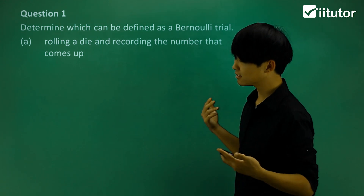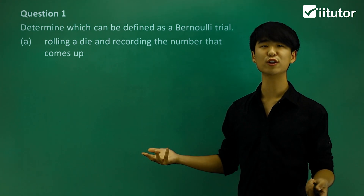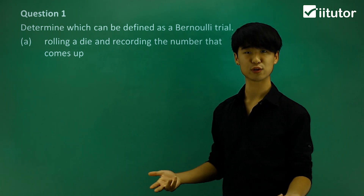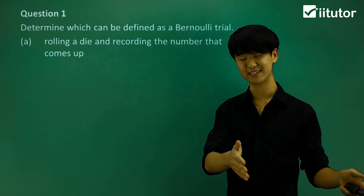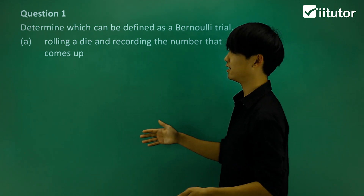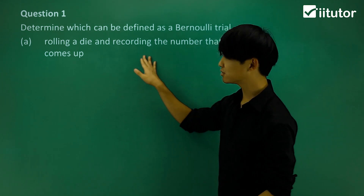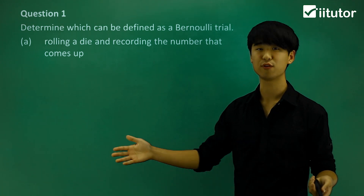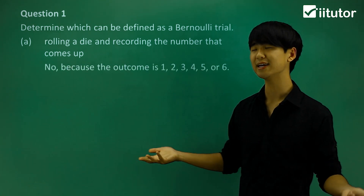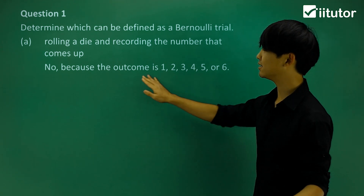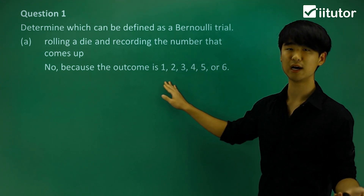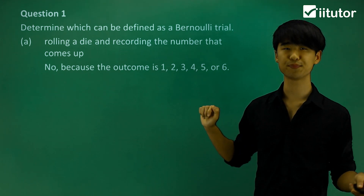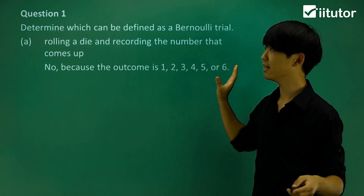Looking at part A — the event is rolling a die and recording the number that comes up. The first thing we know about Bernoulli trials is that the outcome is either a success or a failure. But if we look at the outcomes of a die, they are 1, 2, 3, 4, 5, 6. So no, it's not a Bernoulli trial because the outcomes are not just one or the other — we have multiple outcomes. This is not classified as a Bernoulli trial.